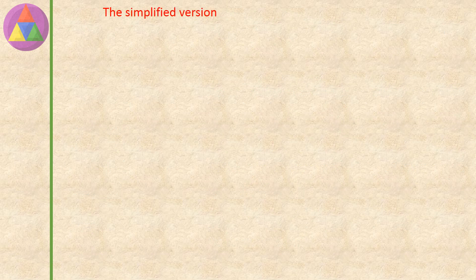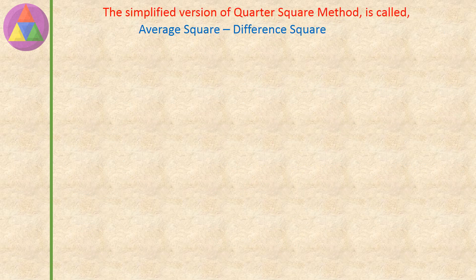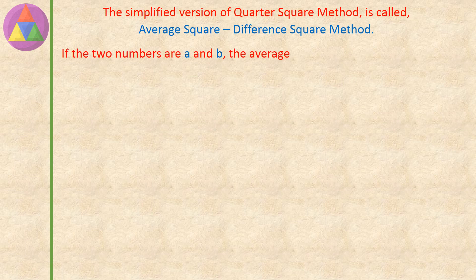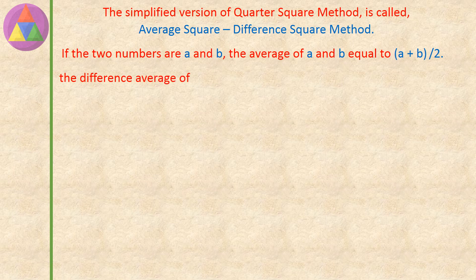The simplified version of the quarter square method is called the average square difference square method. If the two numbers are A and B, the average of A and B equals A plus B, divided by 2. The difference average of A and B equals A minus B, divided by 2.